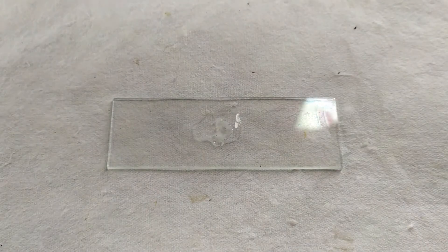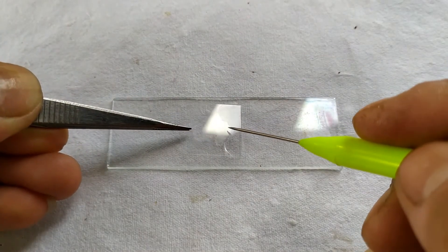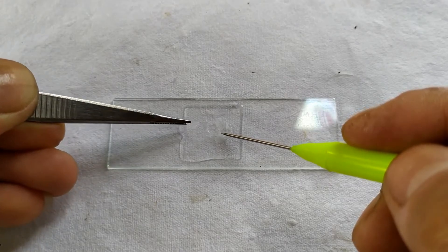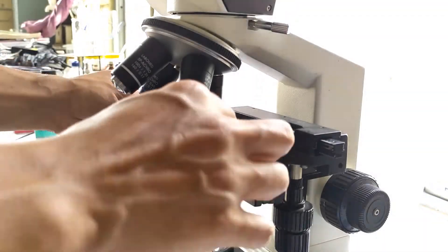Place the peel on the slide in a drop of water and cover it with a cover slip, making sure to avoid any air bubbles. Observe the slide under the microscope.